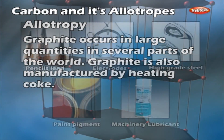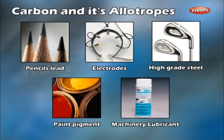Uses of graphite: It is used to make the lead in pencils. It is used in making electrodes. It is used as a lubricant in machinery. Its rods are used as moderators in nuclear reactors. It is used as pigments in paints, as polish, and for the manufacture of high grade steel.